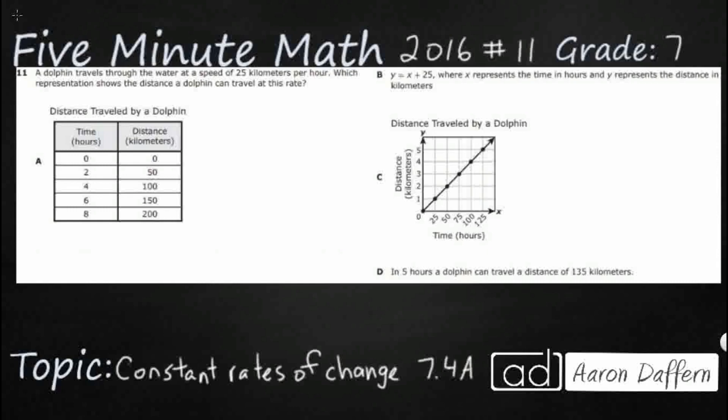We have a dolphin that's traveling through the water at 25 kph, or kilometers per hour, so we need to find a representation that shows the distance a dolphin can travel at this rate. And the one thing that we need to remember is the basic equation: distance equals rate times time.